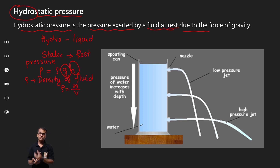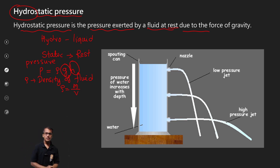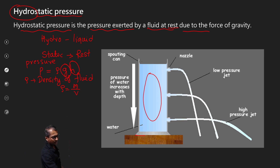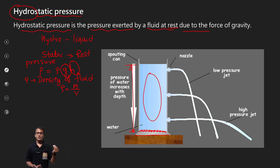For example, consider a water bottle. If the water level is very high, the pressure is higher. If the height is very low, the pressure is lower. So H is the total height of the water from the base surface. We can verify this — pressure depends on the height of the fluid column.